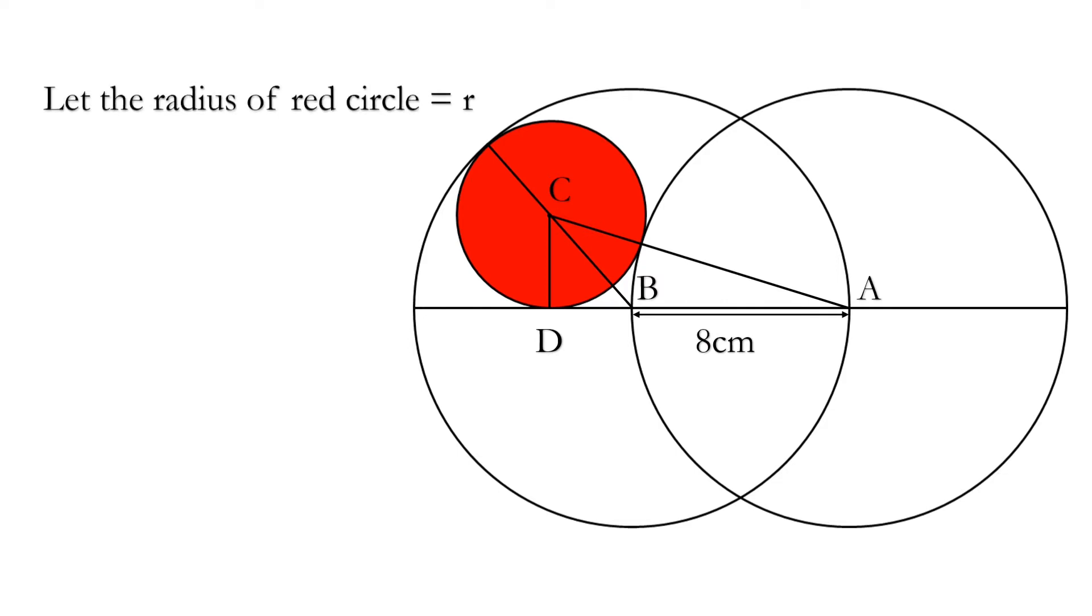Let us suppose that radius of the red circle is R. Now from this figure we can conclude that CA is equal to 8 plus R because radius of the circle is 8 cm and we have supposed that radius of that circle is R.